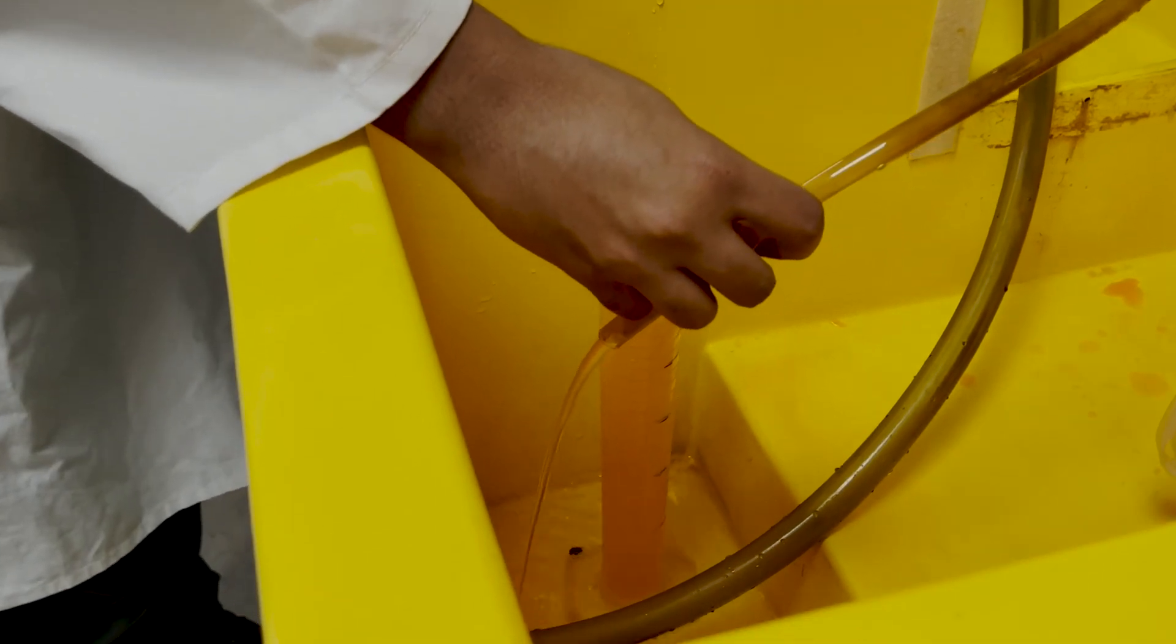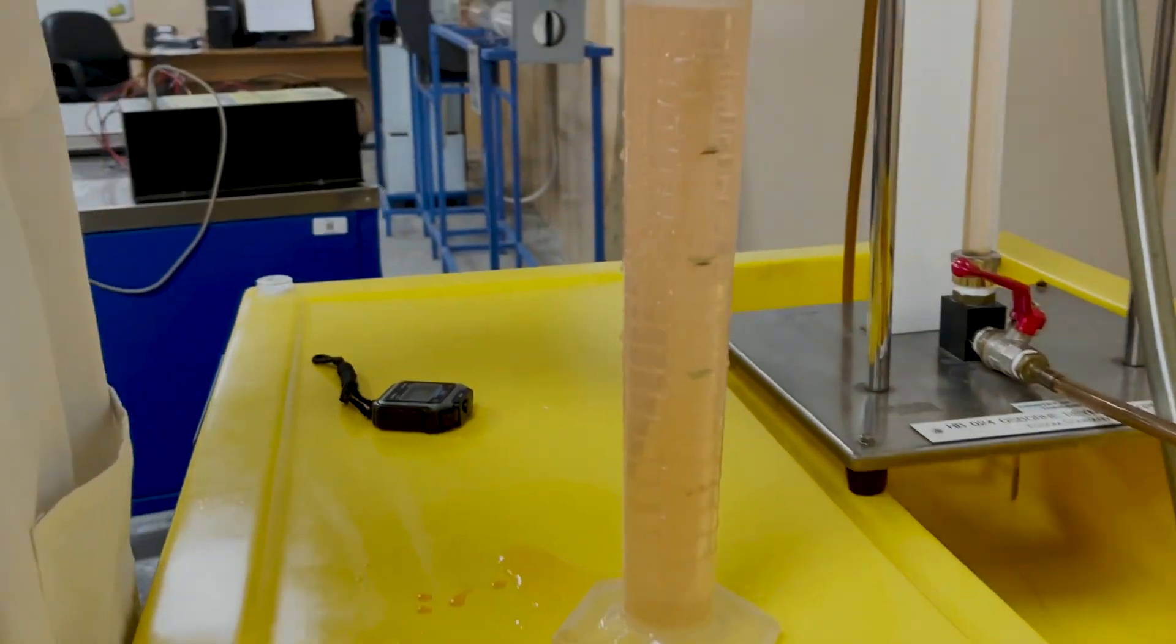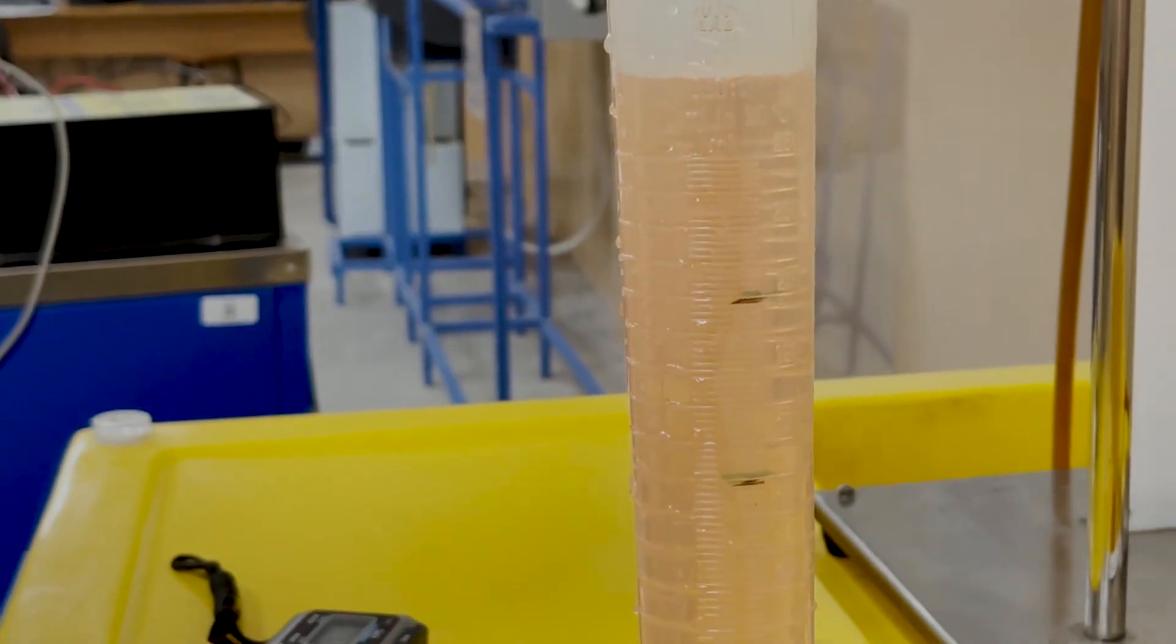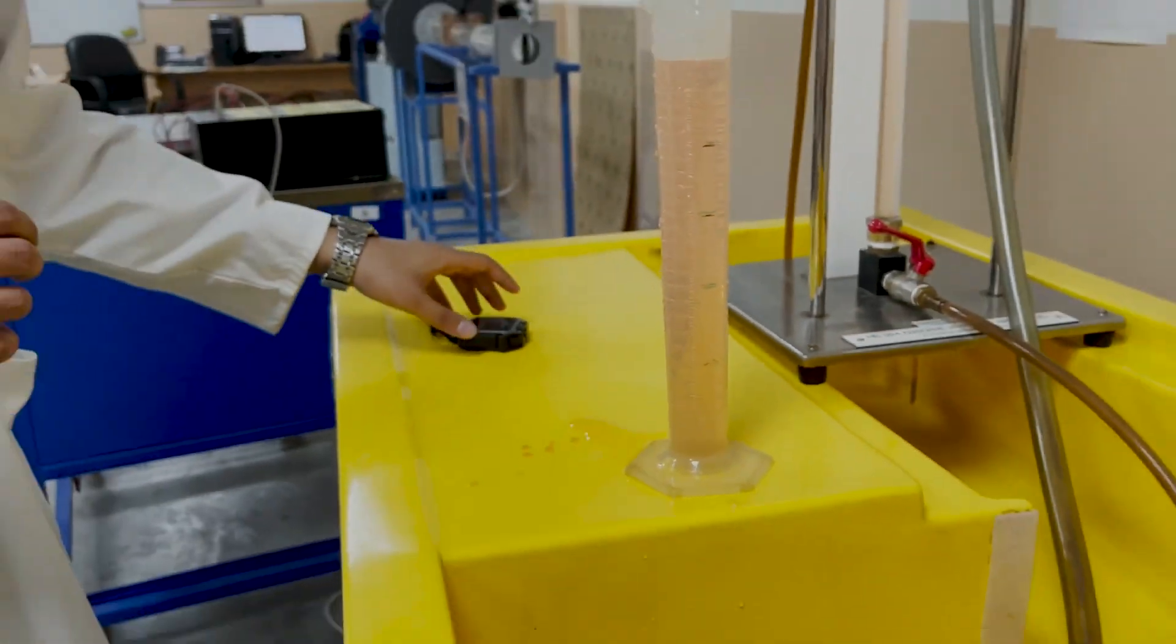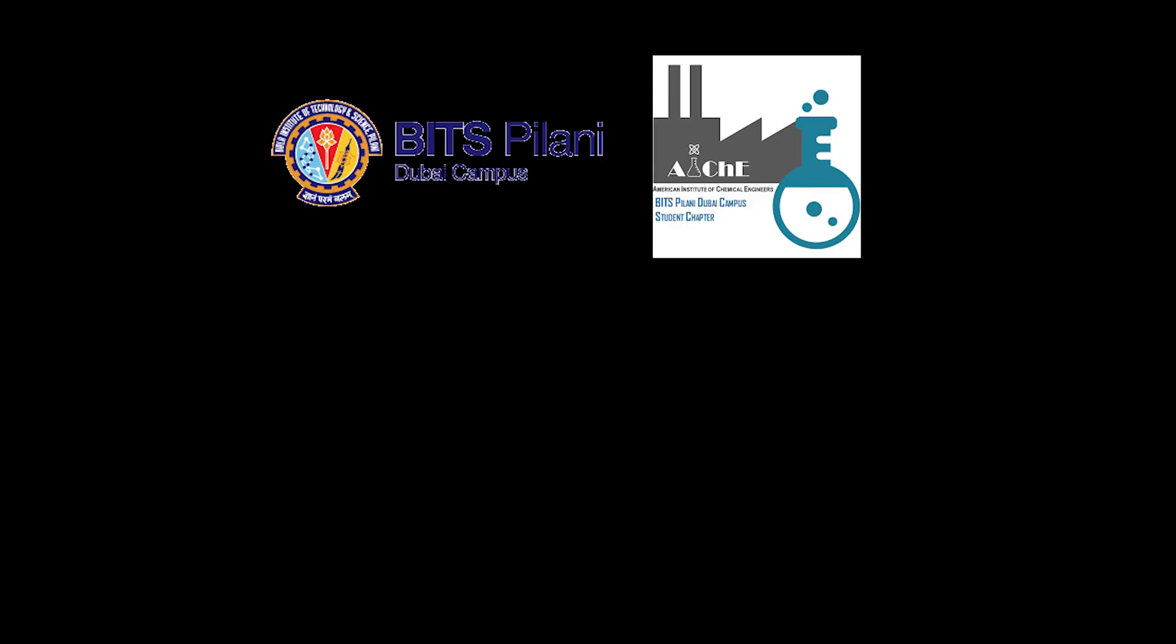For 10 seconds we are going to see how much water is being collected in the measuring cylinder. We can note down these values and calculate the Reynolds number. Thank you for the experimental procedure. So this is how this experiment is performed.